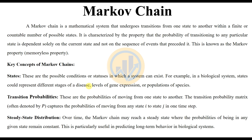Key concepts of the Markov chain: States are the possible conditions or statuses in which a system can exist. For example, in a biological system, states could represent different stages of disease, levels of gene expression, or population of species. Transition probabilities are the probabilities of moving from one state to another. The transition probability matrix, often denoted by P, captures the probability of moving from any state i to state j in one time step.